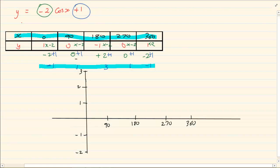So now when we are drawing, we are going to plot 0 and minus 1. Then we are going to plot 90 and 1. 180 and 3. Then we have 270 and 1. And then we have 360 and minus 1. And then again it is a matter of joining the dots. And there is your graph.